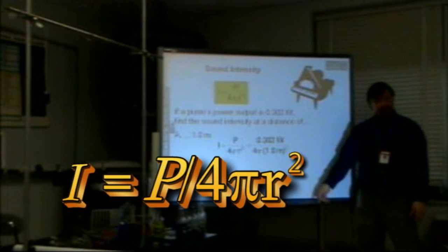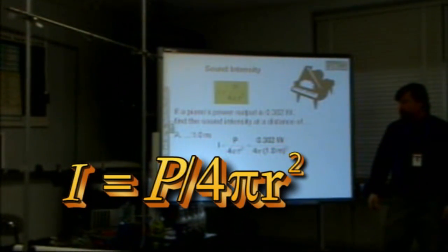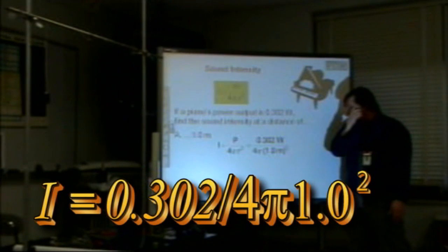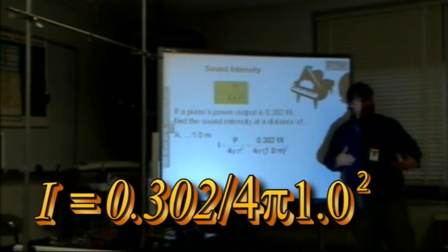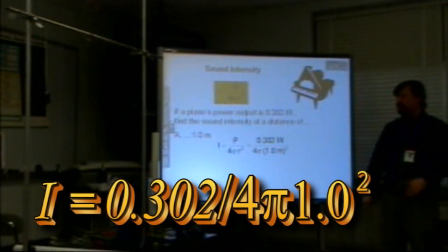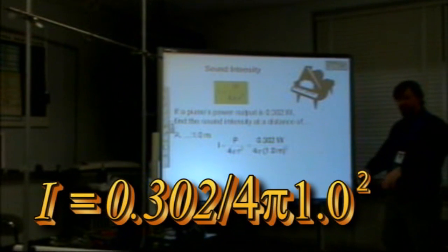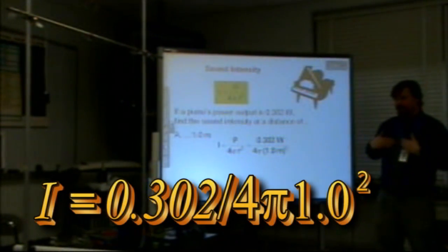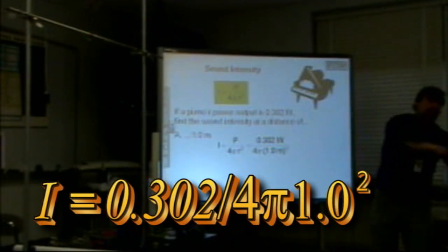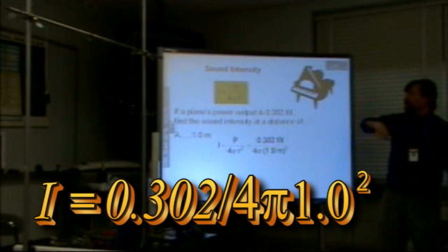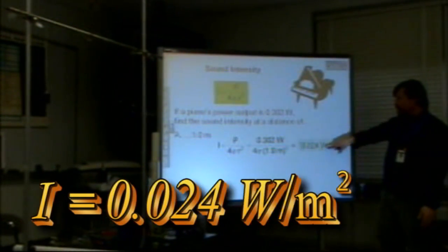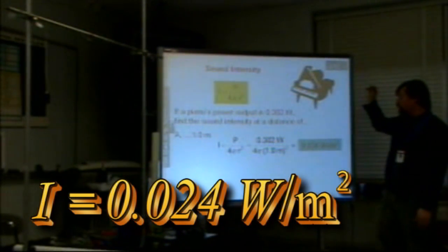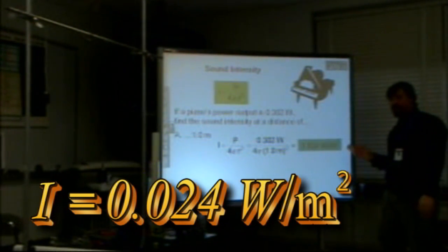P for power is 0.302 watts, and R is our distance from the source. Remember, the sound is going out in all directions — circular — and R, the distance to the sound source, is the radius because it goes in all directions at once. We find that our intensity is 0.024 watts per meter squared.